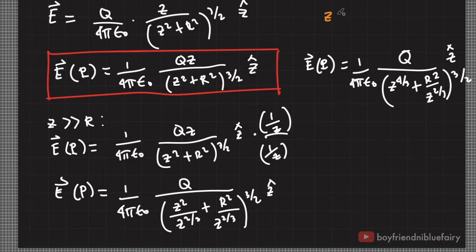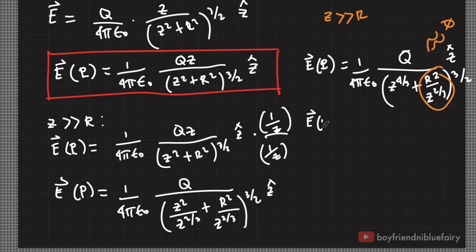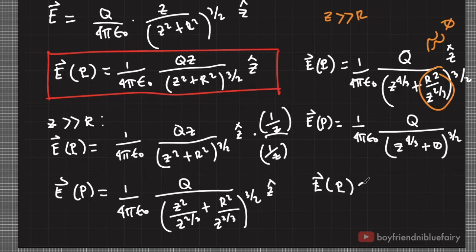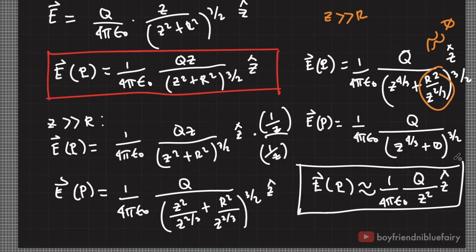If the condition is that point P is along the z-axis very far from the ring of charge, then the term R squared over z squared is approximately equal to zero because z is very large compared to R. Therefore, if z is far greater than R, the electric field is approximately equal to 1 over 4π epsilon-naught times Q divided by z squared, in the z-hat direction. This is similar to the expression for the electric field of a point charge, consistent with the fact that the ring of charge looks like a point charge when viewed from very far away.